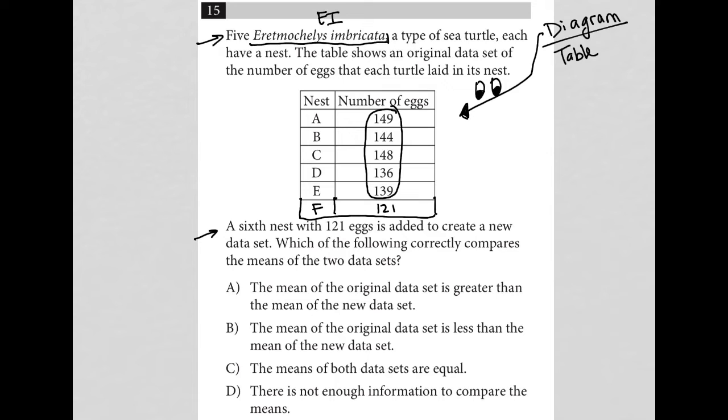So kind of halfway between 136 and 149. And by adding a value that's much lower than that, we expect our mean to go down. And that could influence our answer, right? That's what I would probably think if I was short for time and just move on.